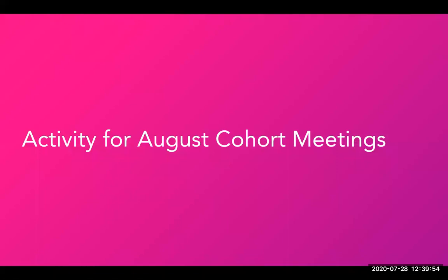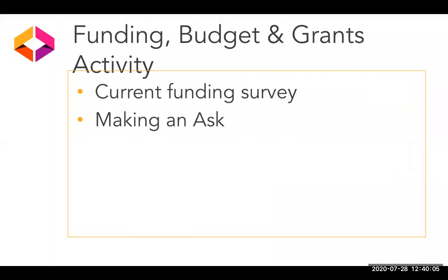We do have an activity associated with this funding and budget presentation. In preparation for this month's cohort meeting, consider completing it — it's just a brief form shared in the video description, called the funding, budget, and grants activity. It has two parts. First is a very brief survey regarding the current funding model or models that you're using at your institution. The second part is called making an ask — which you can also think of as how to get what I need — a short written activity that will guide you through some brainstorming about making an ask for funding or for a particular resource need. You will receive an emailed copy of your responses that you can refer to in your August cohort discussion.